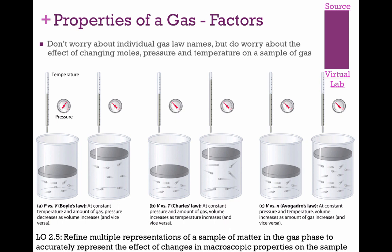You don't need to memorize Boyle's Law, Charles's Law, or Avogadro's Law individually — what you need to understand are the relationships between them. If you know the combined gas law, P1V1/T1 = P2V2/T2, anything that remains constant can be crossed out and you can solve. These types of questions in multiple choice might show particle diagrams and ask what happens to volume if you decrease pressure.